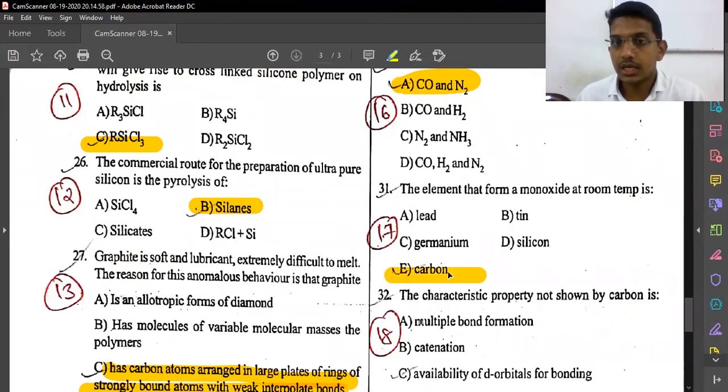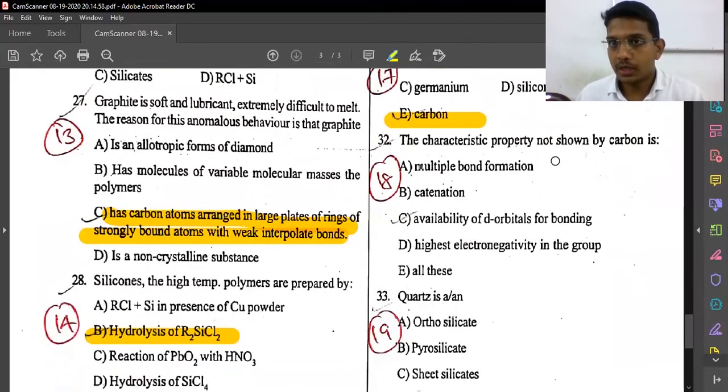The characteristic property not shown by carbon is availability of d orbitals for bonding. Carbon has electronic configuration 1s² 2s² 2p², so it does not have d orbitals in its electronic configuration. The answer is option D.